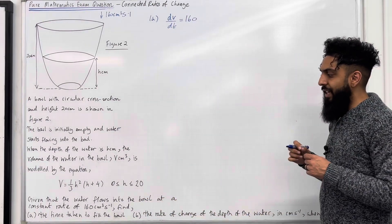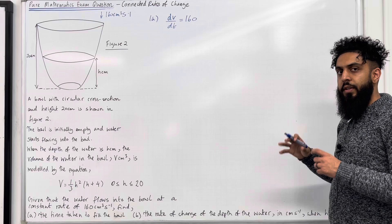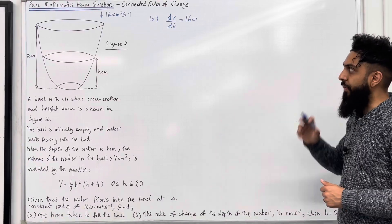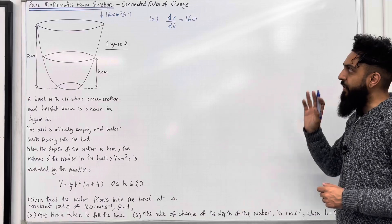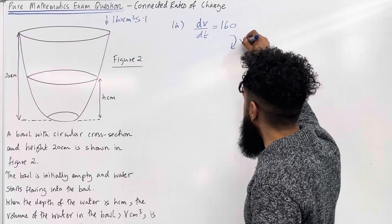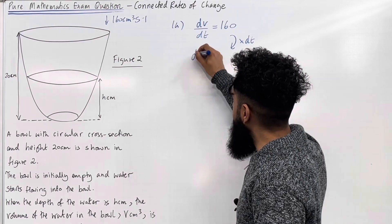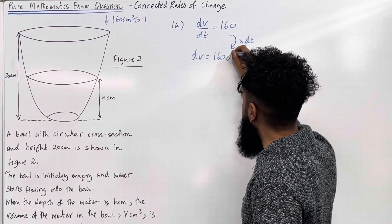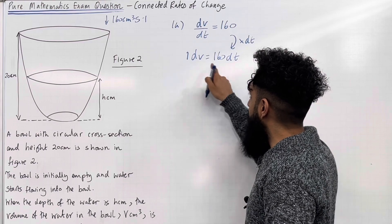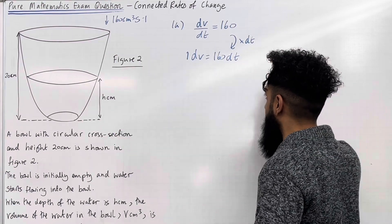Now, we want to find the time taken to fill the bowl. To do this, we need to generate an equation for the volume v in terms of the time t by solving this differential equation. The first step is to multiply both sides by dt. This gives me dv equal to 160 dt.